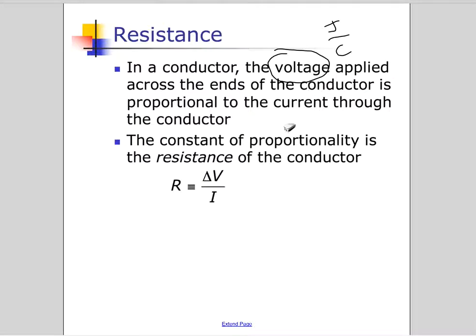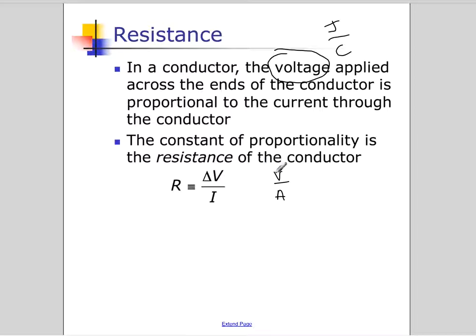Resistance is measured in volts per amp. The resistance is equal to the voltage divided by the current. Voltage can be thought of as the pressure that's pushing the electrons through the wire, and amps is the actual flow of the electrons. So resistance is a measure of how many volts it takes to get an amp to flow through the wire. The higher the resistance is, the more voltage it takes to get the current to flow through the wire. That's the concept of resistance.